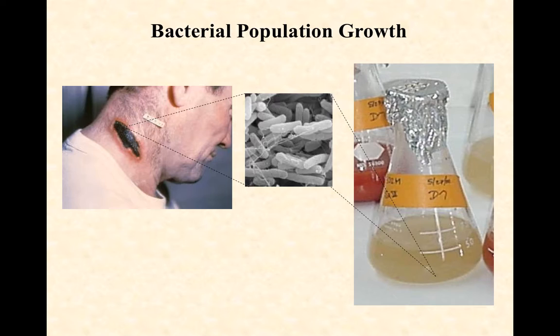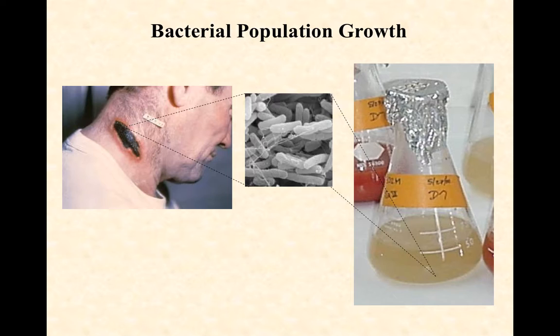Let's talk for a few minutes about what it means when we say bacterial growth. We clearly don't mean one cell just growing into something larger — we mean cell division, so we really mean population growth. One cell becomes two, two becomes four, and so on, whether in a flask, on a petri dish, or in an infection. That cutaneous anthrax infection shown here resulted from spores landing on skin, revegetating, and beginning to grow. When we talk about bacterial growth, we're talking about bacterial population growth.